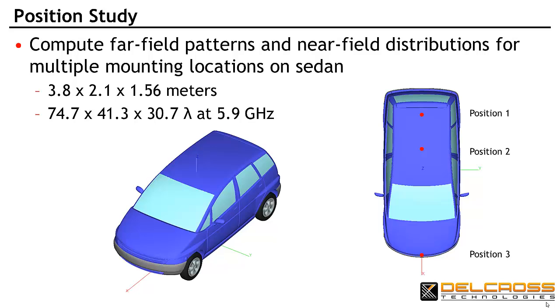We'll consider three antenna installation locations using Savant: a rear top position, position 1, a center top position called position 2, and then another position on the front forward called position 3.